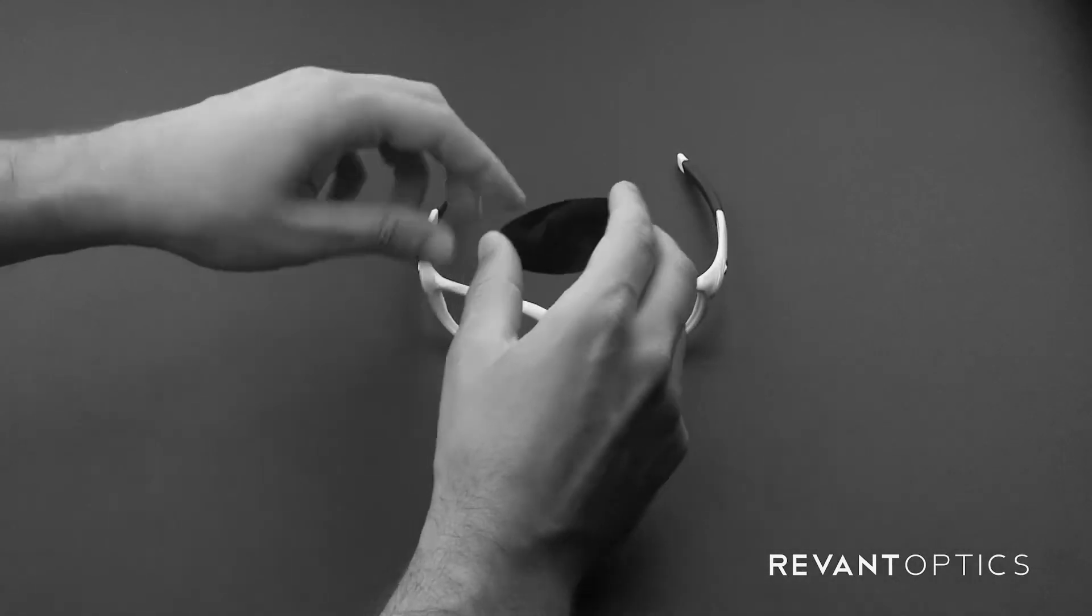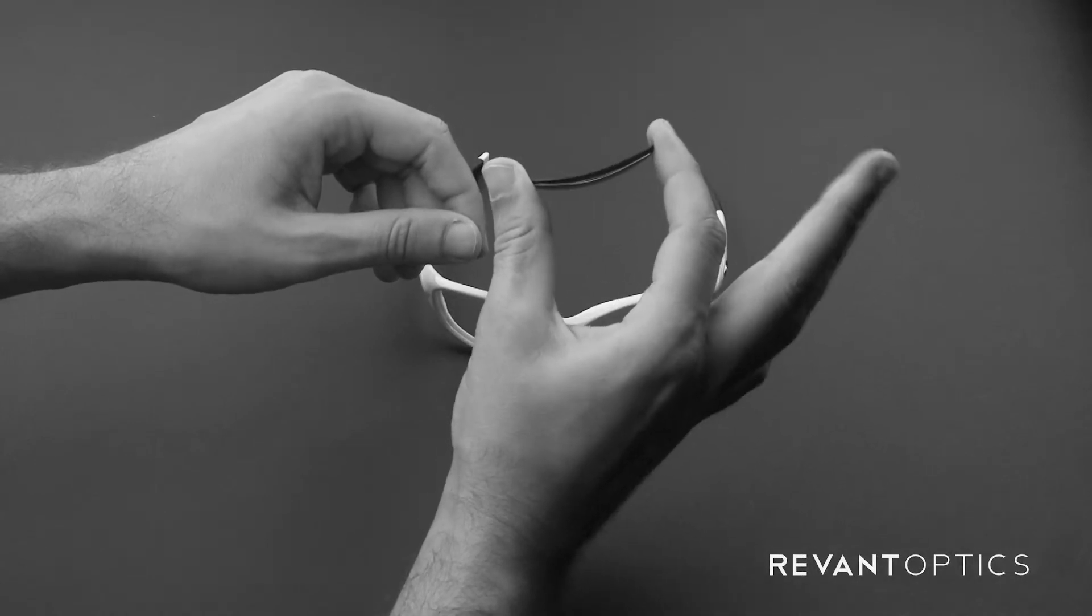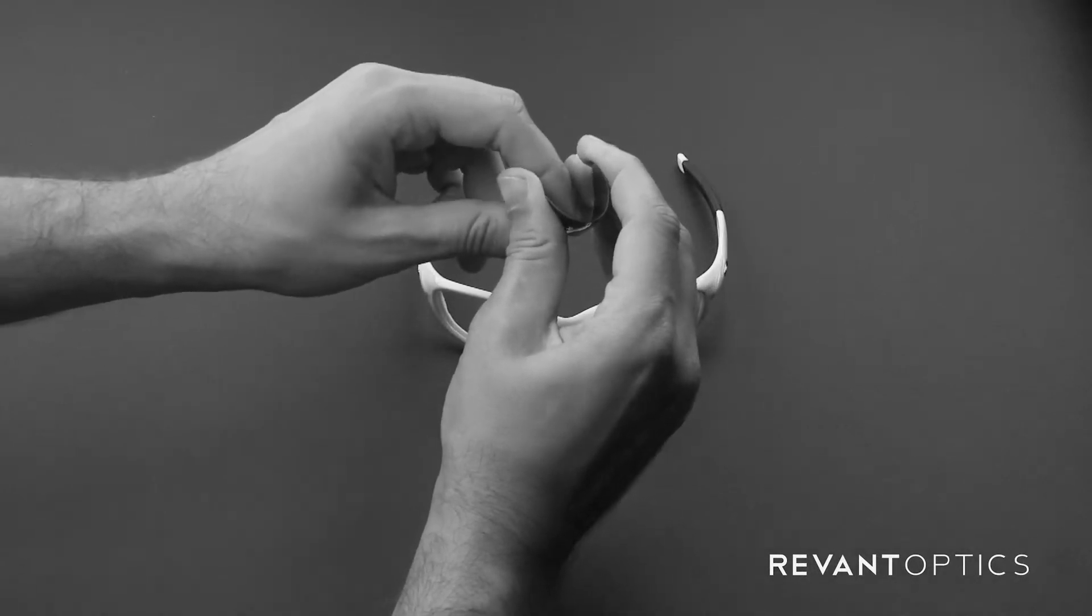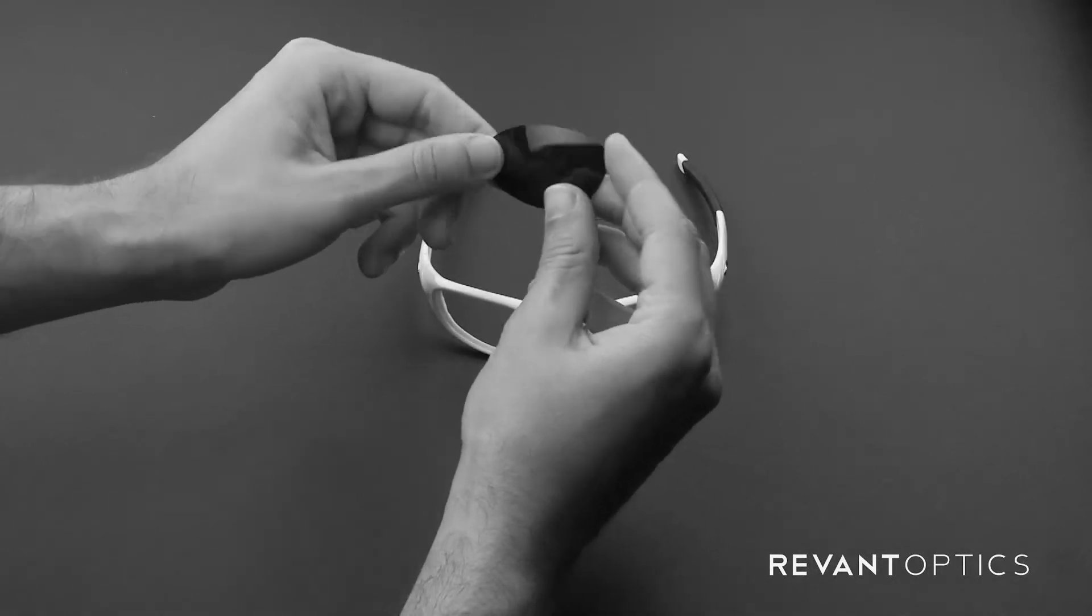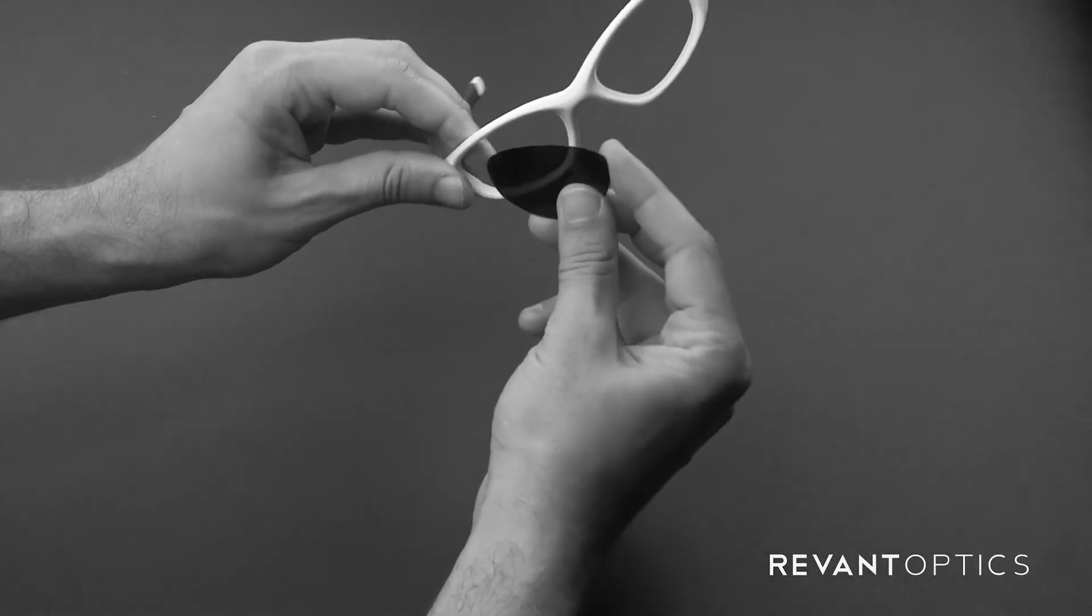If you need to bend the lenses at all, don't worry—they're extremely durable and flexible, as you can see here, and they pop right back into their original shape. These particular lenses are RevantOptics Stealth Black polarized lenses, precision cut to fit this frame.